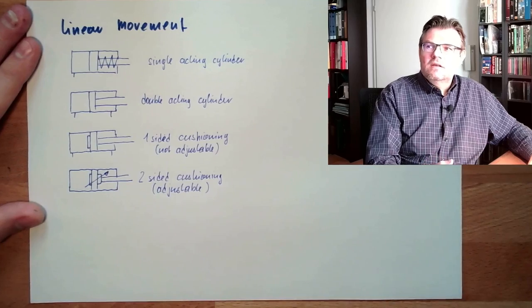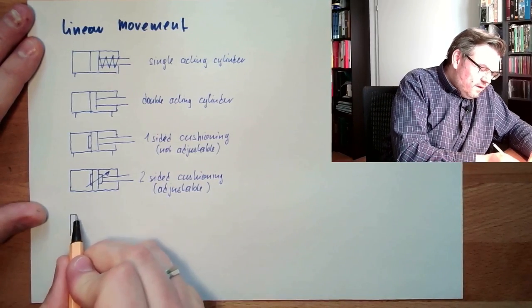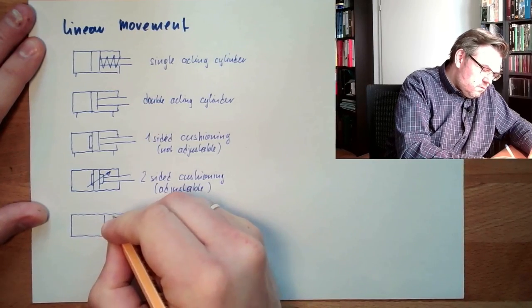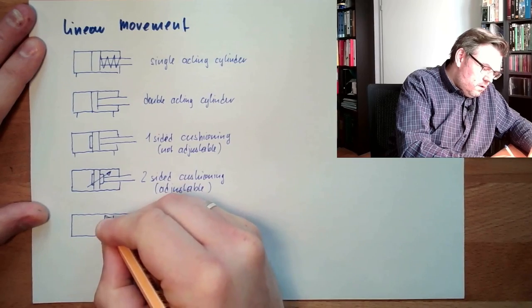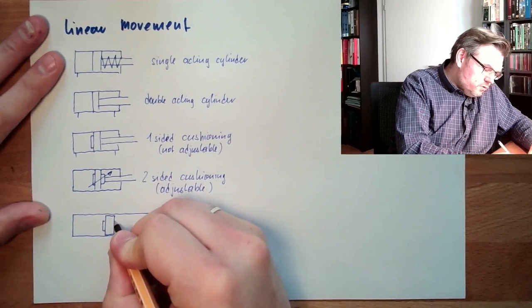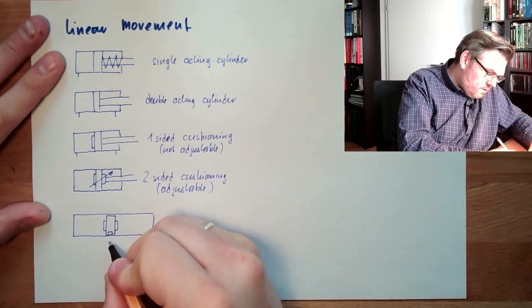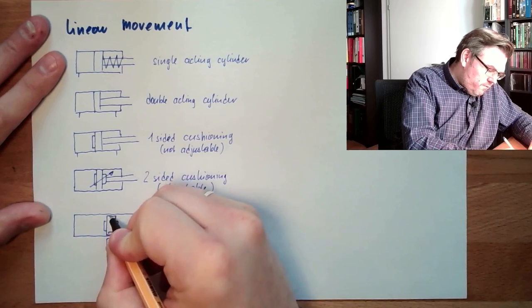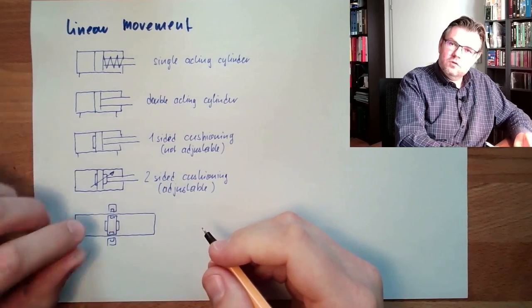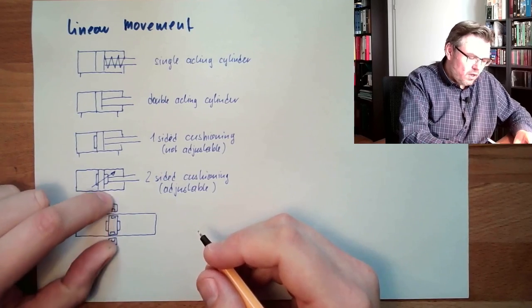And then, of course, there are the special forms. If we have a cylinder without rod, it will look like this. And there might also be cushioned. And then we have here, for instance, this symbol here, this means magnetic coupling. So this is a rodless cylinder with magnetic coupling from the piston part to the outer part.